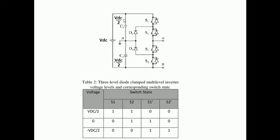Here we have C1 and C2, with voltage levels at +Vdc/2, 0, and -Vdc/2. There are four switches in this three-level diode clamp multilevel inverter. The switching states are: if switches S1 and S2 are on, we get the voltage VDC/2. If S2 and S1' are on, we get 0V. And if S1' and S2' are on, we get -VDC/2. So we obtain three voltage levels: +VDC/2, 0, and -VDC/2.